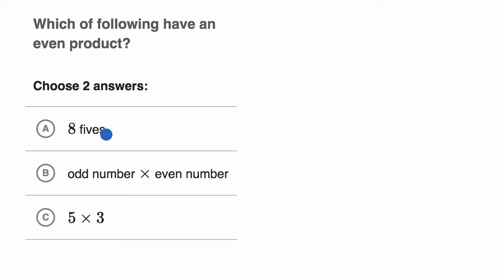Okay, eight fives. So eight fives is the same thing as eight times five. And this is a situation where we're multiplying an even, E for even, times an odd, which we've already talked about is going to give us an even result, an even product.